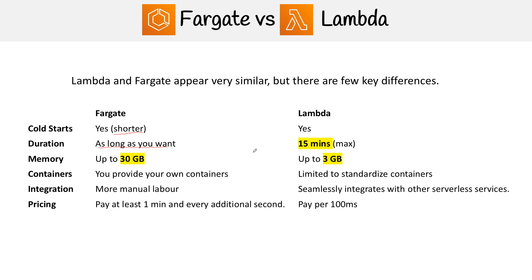In terms of memory, Lambda has an upper limit of 3 gigabytes, whereas Fargate has an upper limit of 30 gigabytes. So if you need a lot of memory, go with Fargate.